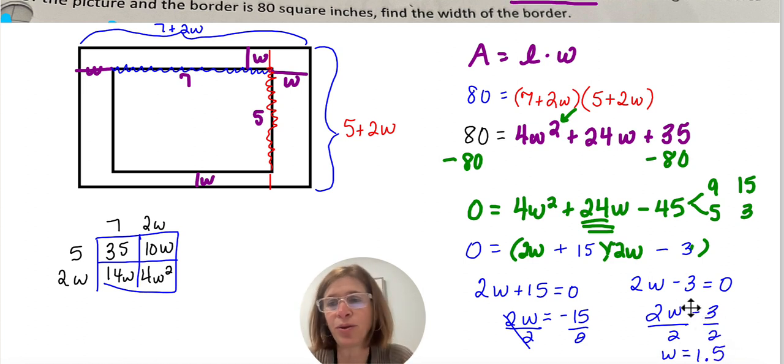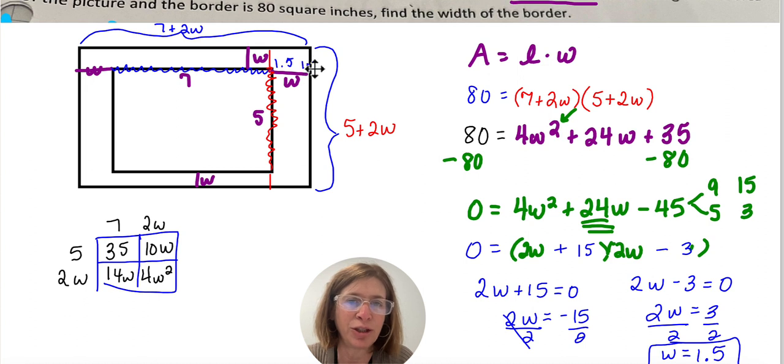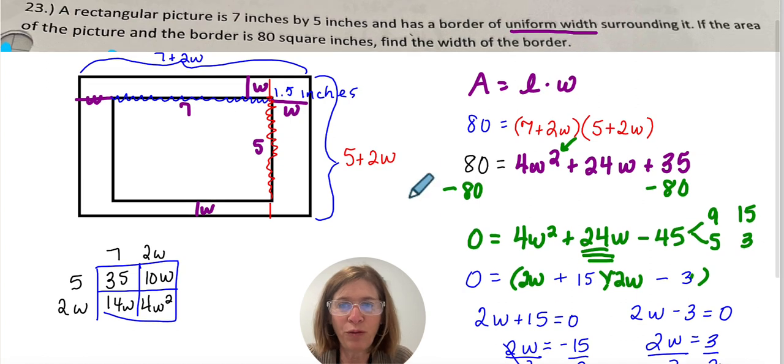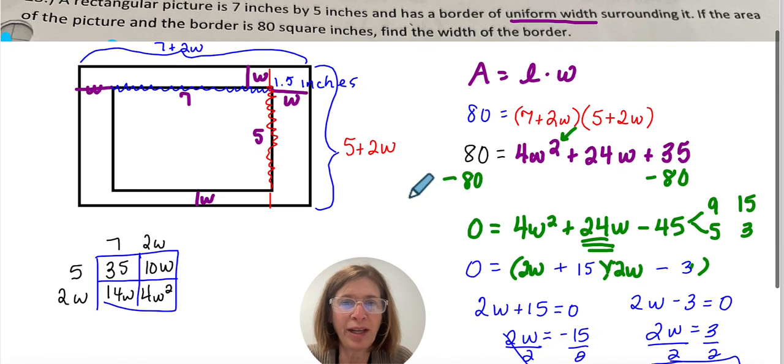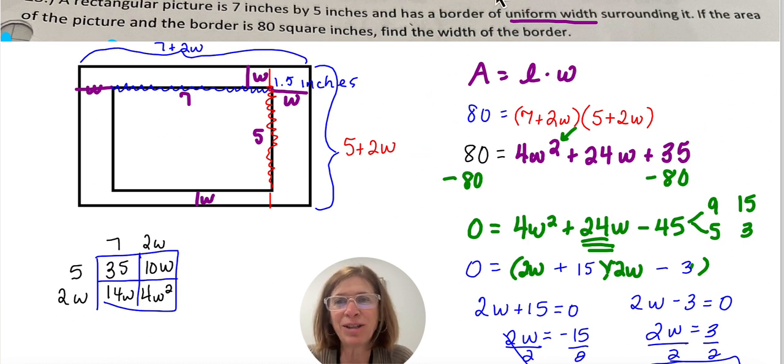So it says find the width of the border, and that would tell me that the width of my border is 1.5 inches. Not square inches because I'm not looking for area. Alright, hopefully that was a helpful video. Again, these uniform width questions come up a lot. And hopefully you kind of are putting together how we got our original equation. Thanks so much. Have a great day.